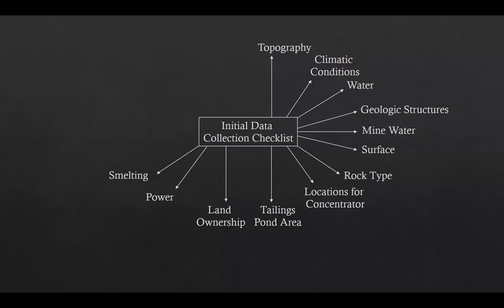The next item is smelting, which includes availability, methods, rates and shipping considerations. The next item is roads, which includes obtaining area road maps, road specifications and the access roads to be constructed to connect local road networks to the mine site.